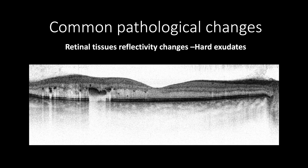In negative black and white, the hard exudates appear in shades of black with an irregular border which casts a white shadow hindering the underlying retinal tissues. In contrast, the hyperreflective dots appear as black dots that don't cast any shadow.